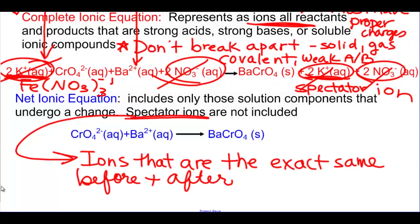A student asks: will spectator ions only be things that are soluble? Yes — if something is insoluble, it can't be a spectator ion. But it doesn't always mean there are exactly two spectators; there can be different numbers. The spectator ions are not participating and not precipitating in the reaction — they're the same before as they are after.